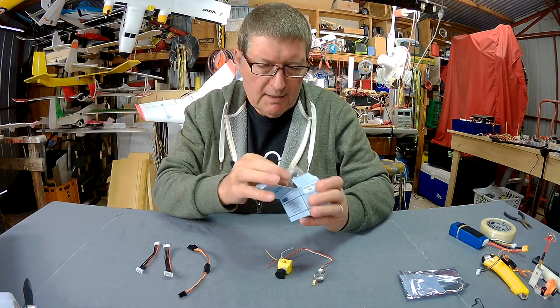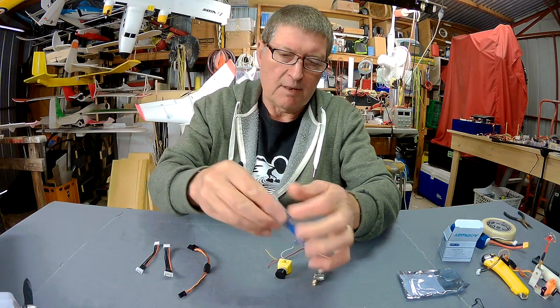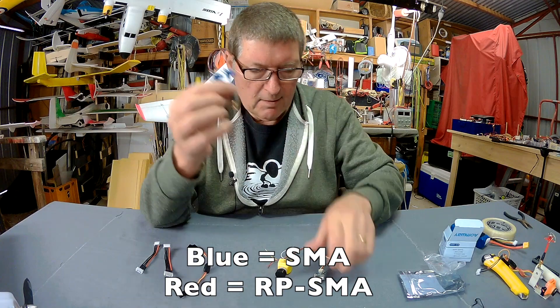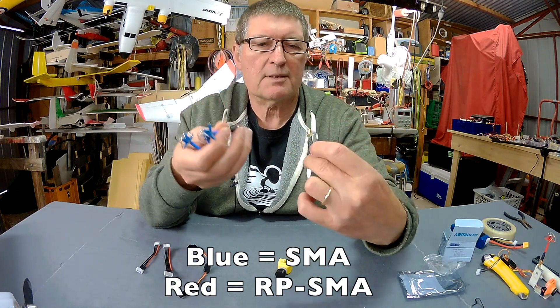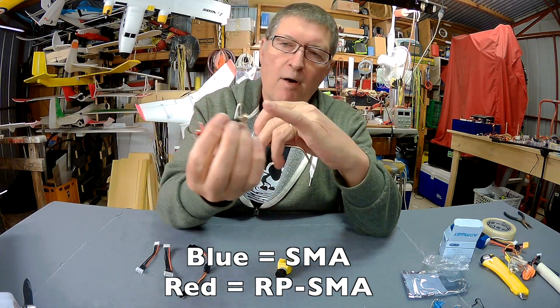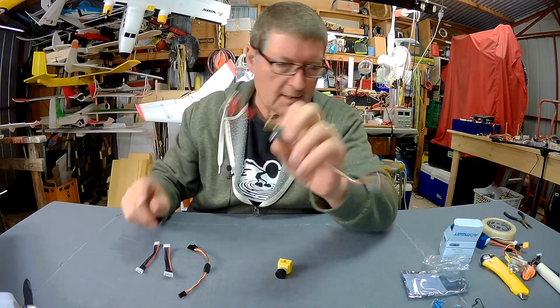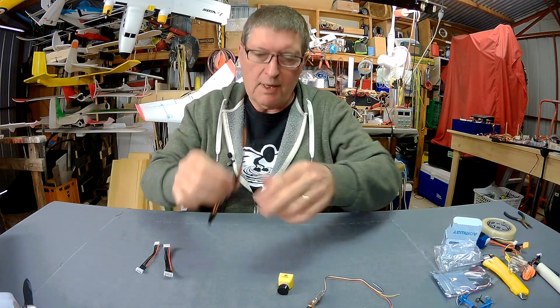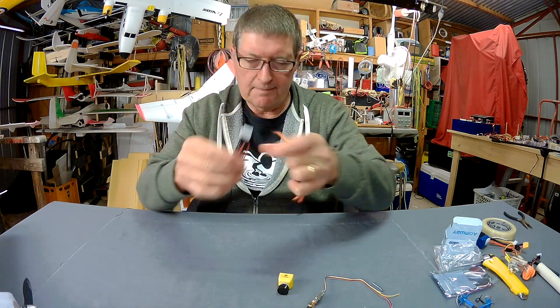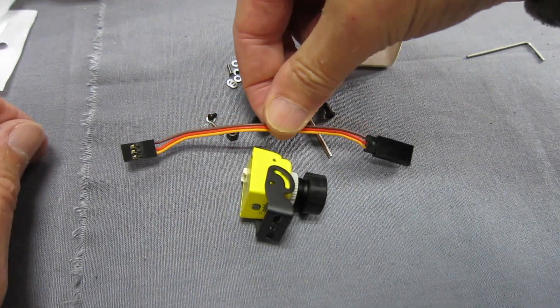And we need some decent antennas as well. My preferred antennas are these Aomway circularly polarised. And you need to buy SMA or RP SMA depending on which transmitter you use. This one uses, for this transmitter we actually need the red ones, which have a hole and a nut. The transmitter has a thread and a pin. So that's a decent antenna that fits on there. And to connect it all up we need a wire lead and a balance port extension cable, either 4S or 3S. So, now we've got all our bits, we're ready to go. Oh, I forgot to mention we need a little servo extension cable too.